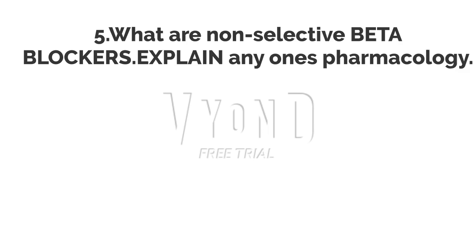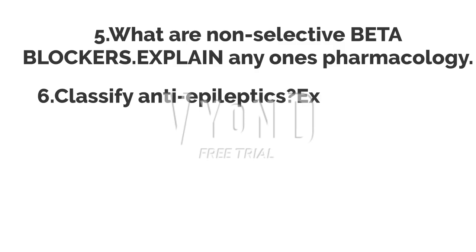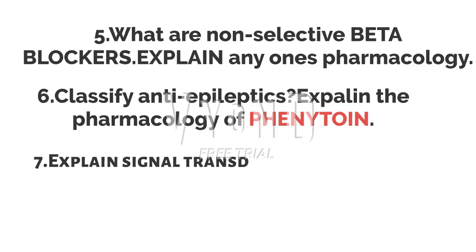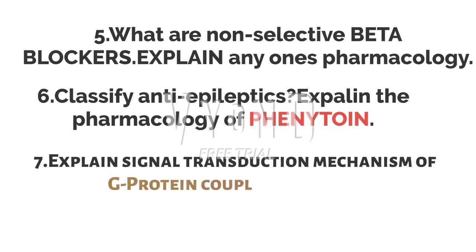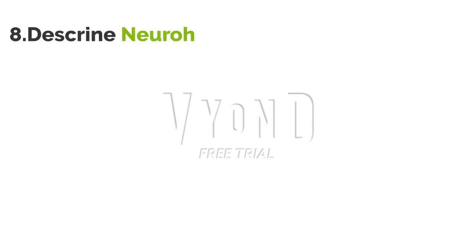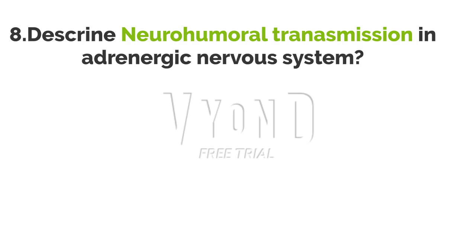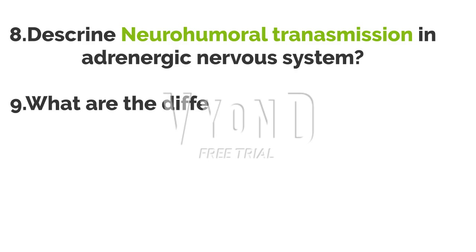The sixth question: classify anti-epileptics and explain the pharmacology of phenytoin. Don't worry — at the end I am going to discuss how to write pharmacology answers. The seventh question: explain the signal transduction mechanism of G-protein coupled receptors. The eighth question: describe neurohumoral transmission in the adrenergic nervous system — a very important question.